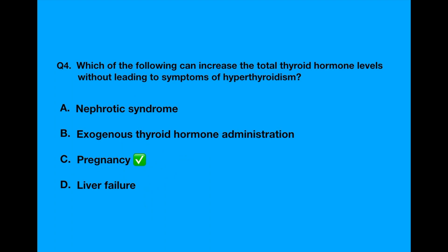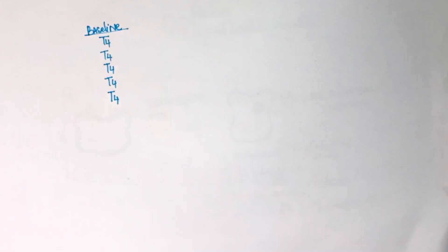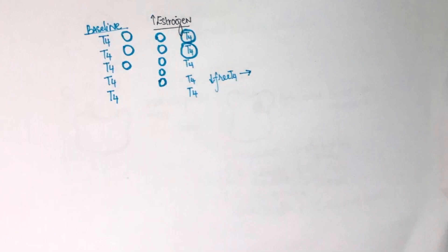To understand this, let's assume this is the baseline amount of free T4 and this is the baseline amount of proteins. Estrogen increases the production of thyroid binding globulin. It also decreases the clearance of this protein. So the amount of bound thyroid hormone will increase. This way, the amount of free thyroid hormone will decrease.